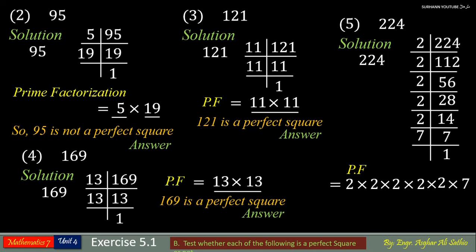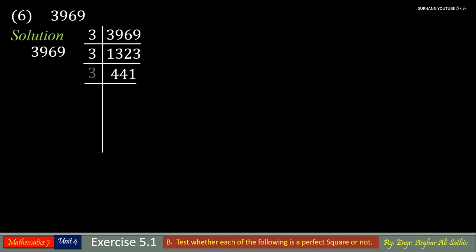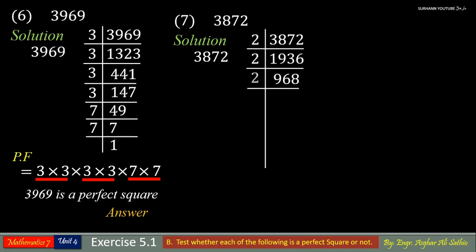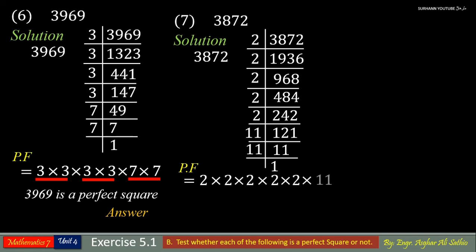Now here in this problem these prime factors are in pairs, and also these are in pairs. But this 2 and 7 have no pairs, so 224 is not a perfect square. So 254 is not a perfect square.